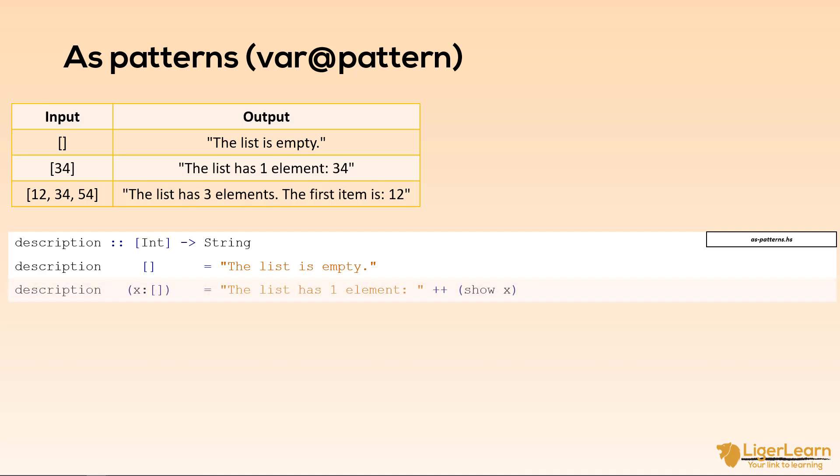Similarly for the case where there is only a single item in the list we can create a pattern which matches it and returns the desired string. We match on x cons the empty list so this represents a single item list exactly.